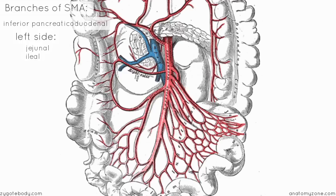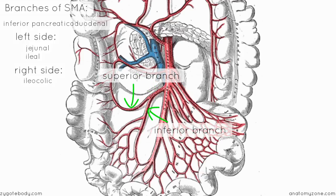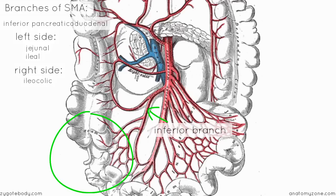Having looked at the blood supply to the jejunum and ileum, we'll move distally to look at the next branch of the superior mesenteric artery — the ileocolic artery. This is the most distal branch of the SMA. It has two branches: the ileocolic artery splits into a superior branch and an inferior branch. The inferior branch is more complicated because it has four branches. If you think logically about the structures in the right iliac fossa, you'll be able to remember what the ileocolic artery supplies.